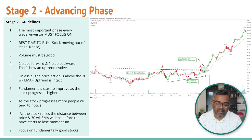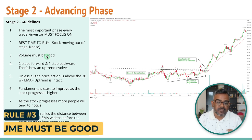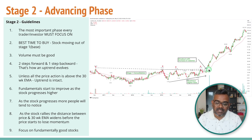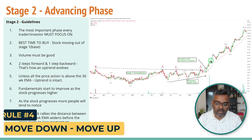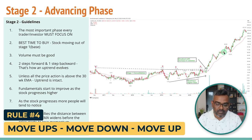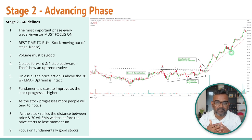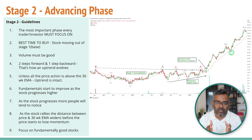When a breakout happens from the trendline, volumes need to be very good. In a stage two uptrend, there will always be a move up and a move down — the stock takes two steps forward and one step backward. If a stock goes up 50%, it's likely to correct at least 20% in the short term before crossing the previous highs and heading eventually higher.